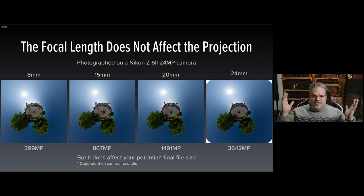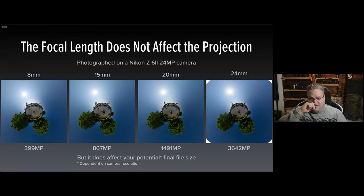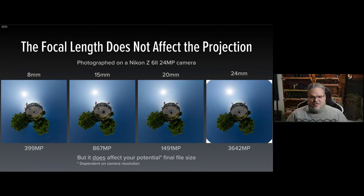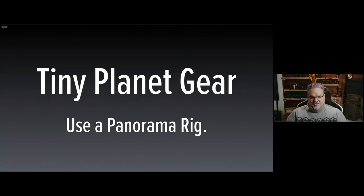The focal length doesn't change the projection whatsoever — I tested this with four different focal lengths and they rendered exactly the same tiny planet in PT Gui. What it does affect is your potential file size. Just an 8mm lens on my 24-megapixel camera turned out to be an almost 400-megapixel composition. You can export at a smaller size from PT Gui Pro, but the 24mm on a 24-megapixel camera is still 36–42 megapixels. The wider you go, the less your computer needs to process.